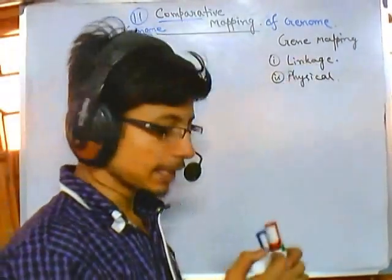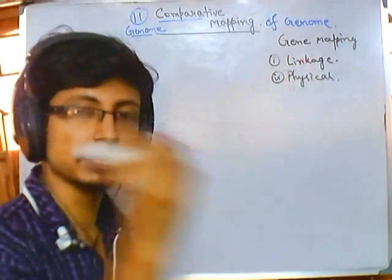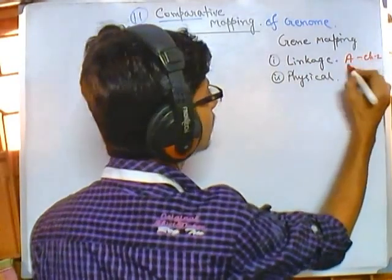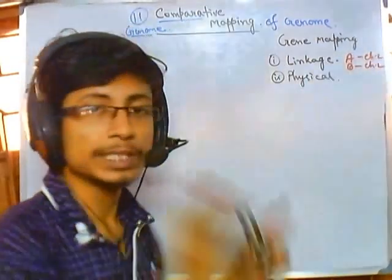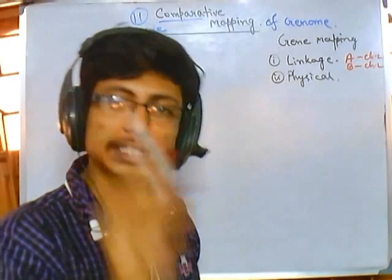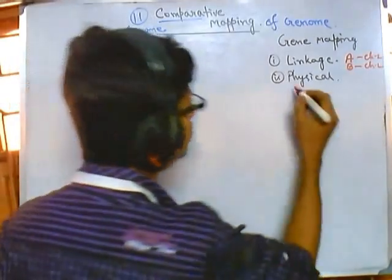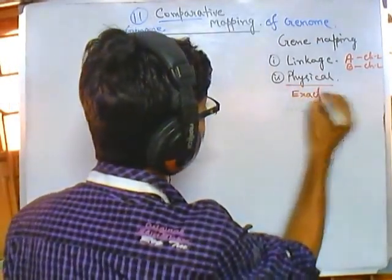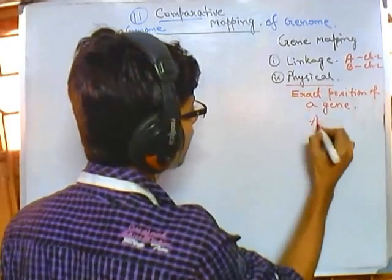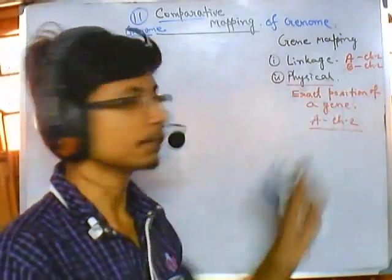Linkage mapping can tell us the relative position of different genes — it's not going to tell us exactly where a gene is located in a genome. Instead, it tells us if gene A is present in chromosome number two, then gene B is also present in chromosome number two. It tells us the position of a gene with respect to another gene. Physical mapping, on the other hand, can tell us the exact position of a gene.